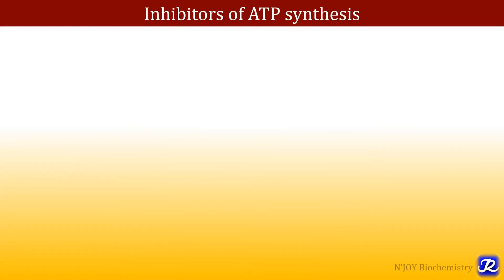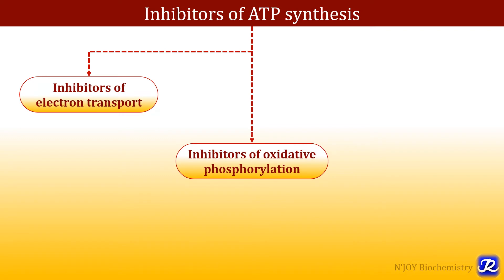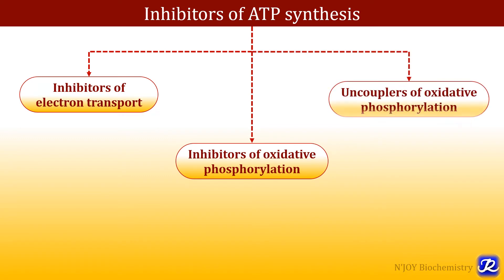The compounds which affect the electron transport chain and phosphorylation are classified into three groups. The first group is inhibitors of electron transport, the second is inhibitors of oxidative phosphorylation, and the third is uncouplers of oxidative phosphorylation.